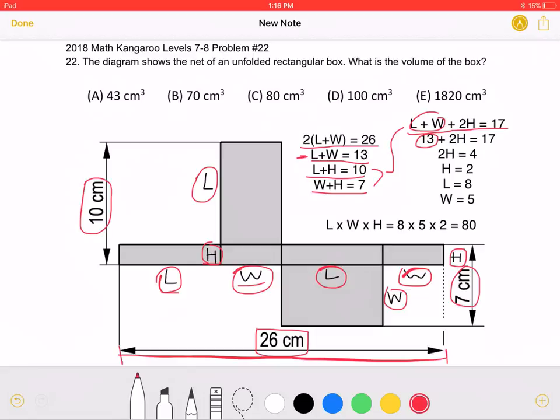If we subtract 13 from both sides, we will get that 2 height is equal to 4, which means that the height must be equal to 2.